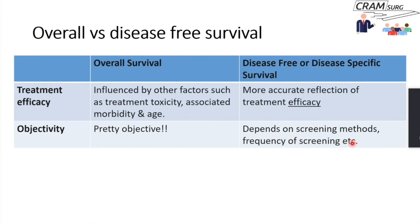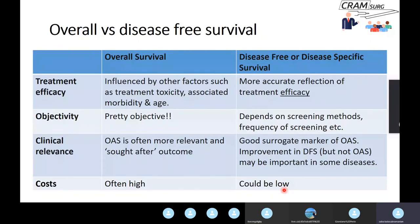Disease-free survival is not objective because depending on how frequently you screen for disease recurrence — say, every three months versus every two years — you might detect events sooner and finish your study relatively early. This illustrates why the definition and measurement frequency of endpoints matters significantly in survival analysis.